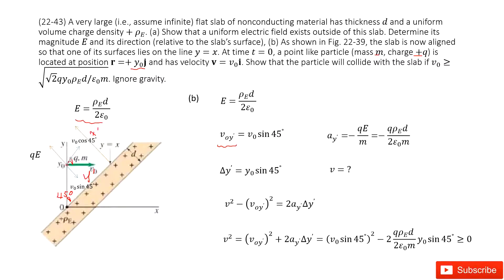In the X-plus direction, there is no acceleration and no force acting on the particle. In the Y-plus component, the electric force brings an acceleration AY-plus. In the Y-plus direction, this acceleration is negative QE divided by mass. Because the electric force is Q times E but in this component it is negative. So negative QE divided by mass — input the E expression inside and we get the acceleration.